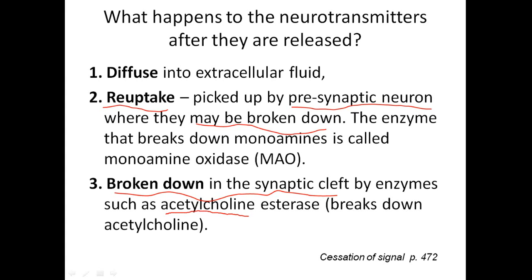Acetylcholine — abbreviated ACh — is a neurotransmitter we'll discuss more after spring break. There is an enzyme called acetylcholinesterase that breaks down acetylcholine in the synaptic cleft, so it stops continuously stimulating the neuron. You want to get rid of it so the signal doesn't keep going.